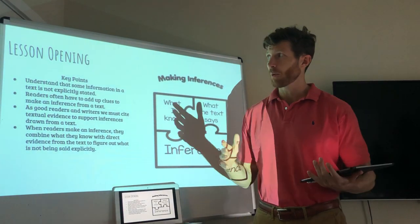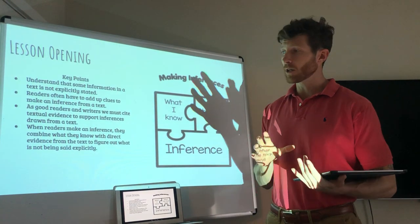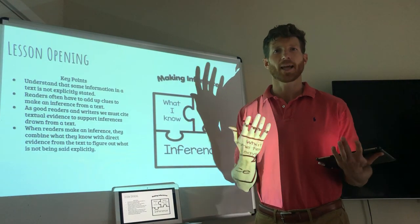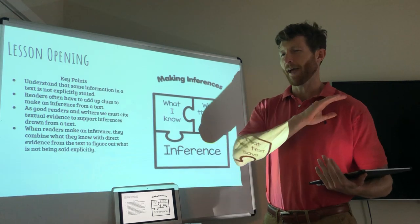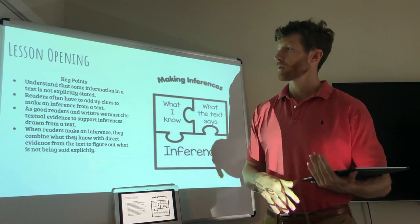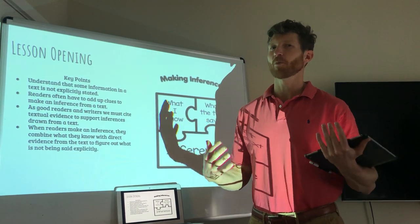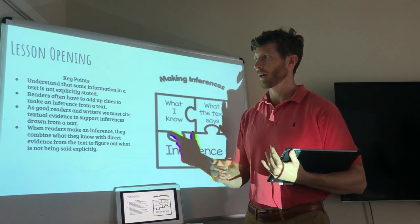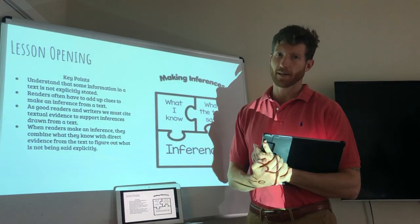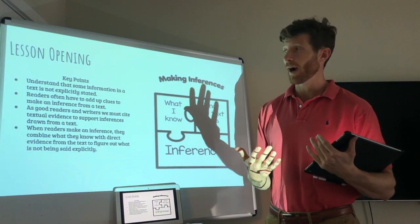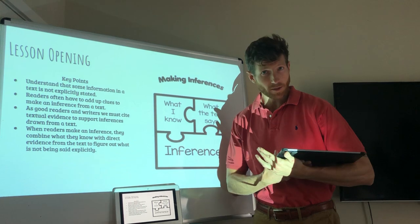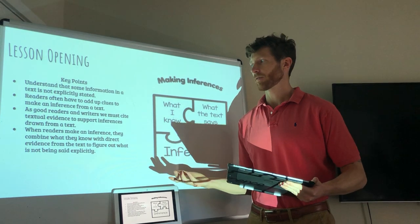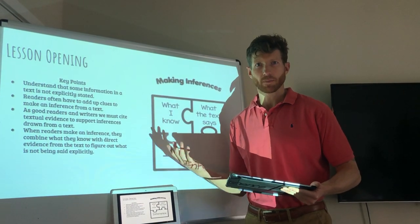Key points for today — the things we really need to know for this lesson: some information in the text is not always going to be explicitly stated. Good authors don't make everything abundantly clear all the time. Readers often have to add up clues to make an inference. As good readers and writers, we must cite textual evidence to support inferences drawn from the text. When readers make an inference, they combine what they know with direct evidence from the text to figure out what is not being explicitly said.